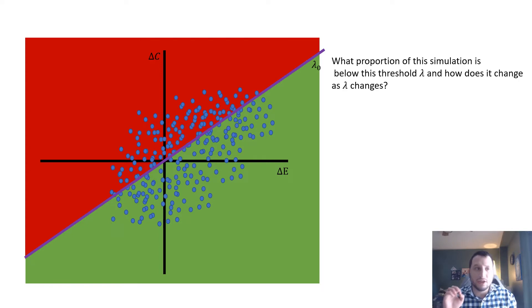Now, the question we want to ask is what is the proportion of this simulation that lies below this threshold lambda naught, and how does it change as our threshold changes?